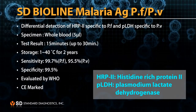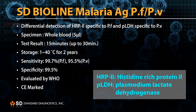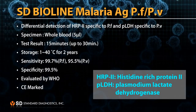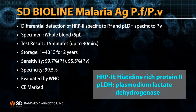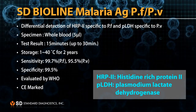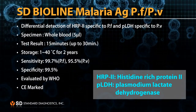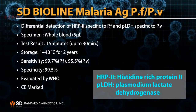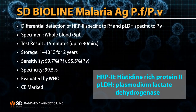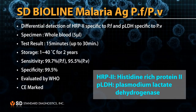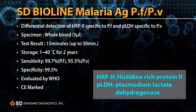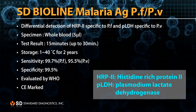The specimen required is 5 microliters of whole blood and the test result is available in only 15 minutes. Storage condition is 1 to 40 degrees centigrade for 2 years. Sensitivity is 99.7% for PF, 95.5% for PV, and specificity is 99.5%. This CE-marked SD BioLine Malaria Antigen PF-PV test was evaluated by WHO with outstanding performance results.